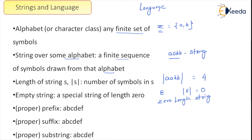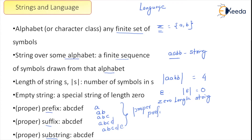There are a few commonly used terms: prefix, suffix, and substring. The prefix is the initial part of a string. For a string like 'abcdef', the proper prefixes are: 'a', 'ab', 'abc', 'abcd', 'abcde'. Similarly, the suffix is the later part, so the proper suffixes would be: 'f', 'ef', 'def', 'cdef', 'bcdef'.